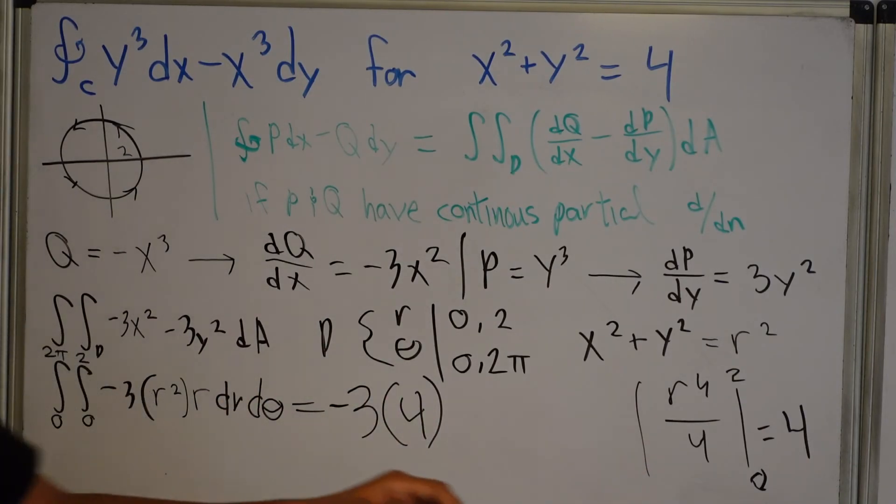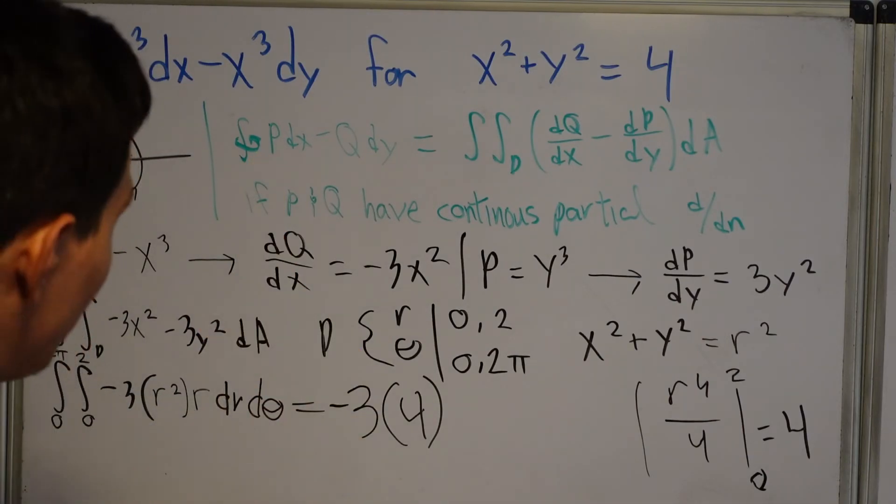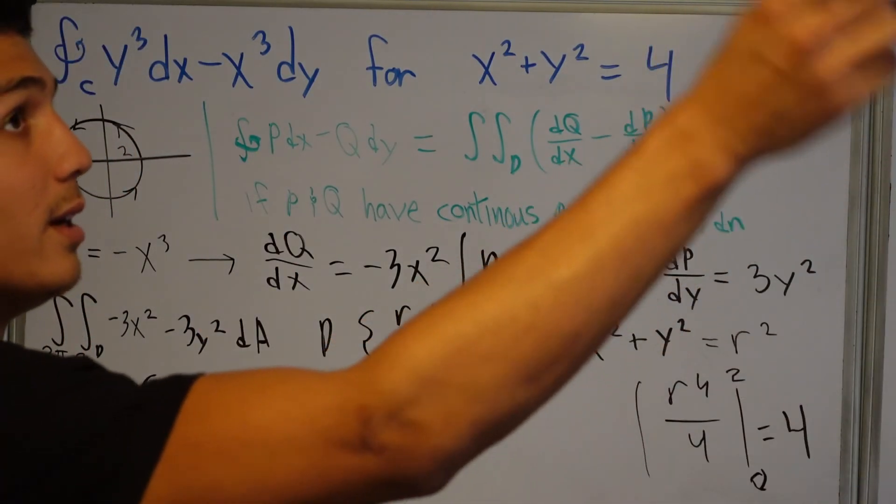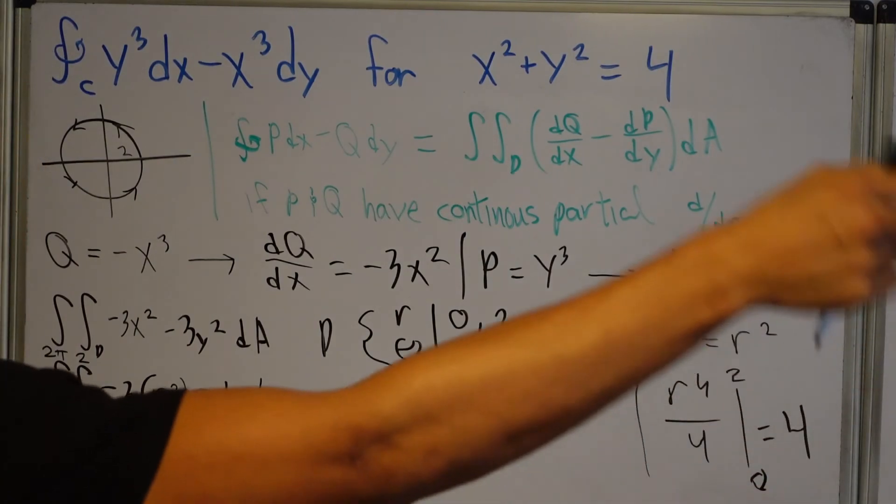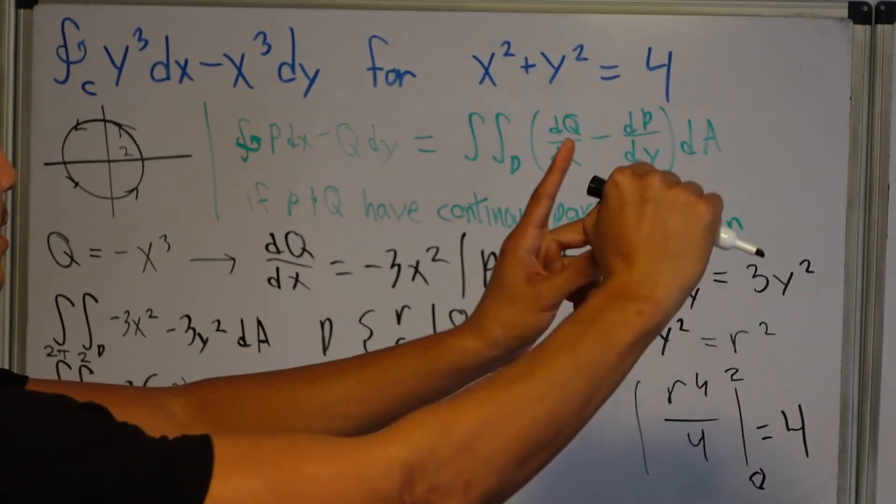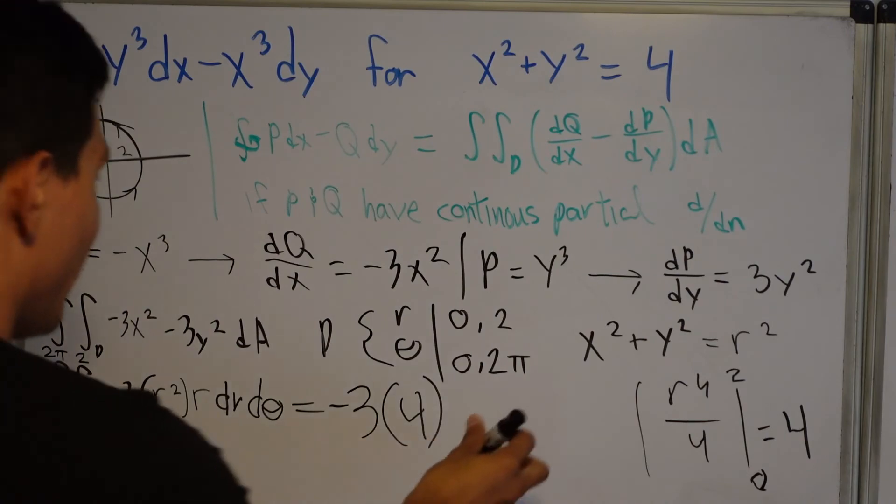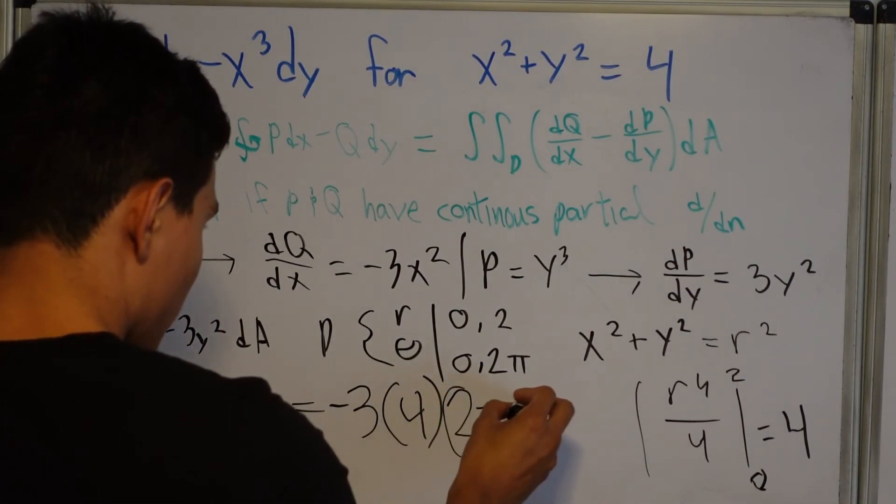And then there is no theta term. There is no real theta term here. The only theta term is 1. So if you integrate dθ, 1 dθ from 2π to 0, it's just 2π. Okay.